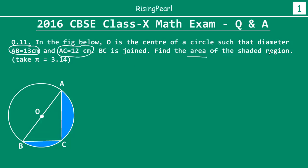We have to find the area of the shaded region, highlighted in blue. The first thing we should know is that any angle in a semicircle is a right angle. Since AB is a diameter, C is a point on the semicircle, so angle ACB is 90 degrees by that theorem. I will also provide the appropriate theorem on the upper right-hand corner of these videos.